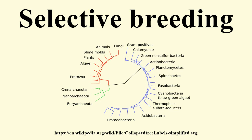A selective breeding program was conducted on the Pacific white shrimp, Litopenaeus vannamei, at the Oceanic Institute, Hawaii, USA, from 1995 to 1998. Significant responses to selection were reported compared to unselected control shrimps. After one generation, a 21% increase was observed in growth and an 18.4% increase in survival to Taura Syndrome Virus (TSV). The Taura syndrome virus causes mortalities of 70% or more in shrimps.